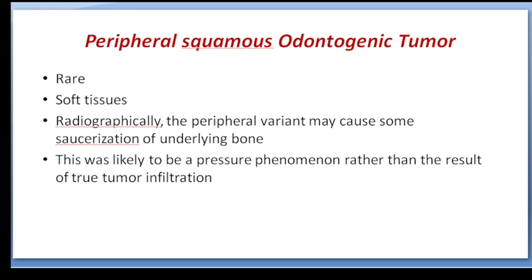Coming to the peripheral squamous odontogenic tumor: it is rare and is found in soft tissues. Radiographically, saucerization of the underlying bone is seen. This may be due to a pressure phenomenon rather than the result of true tumor infiltration.